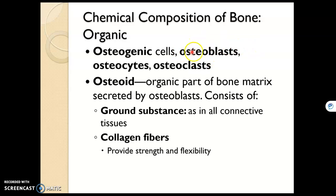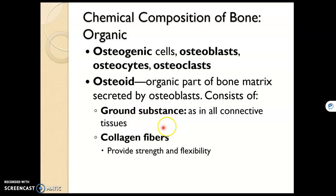Osteoblasts secrete the bone matrix — osteoblasts build bone. What they secrete is called osteoid, and that is another organic component of bone. Osteoid is a gel-like substance; it's not hard like you would think the matrix of bone is. Osteoid is just ground substance and collagen fibers for strength.